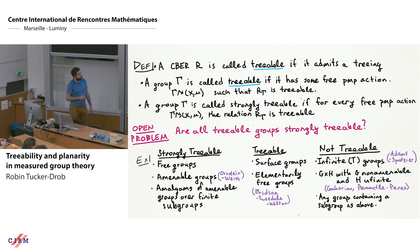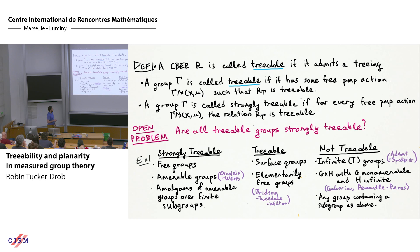For non-treeable groups: a paper of Adams and Spatzier establishes that infinite groups with property T are not treeable. Independently, arguments of Gaboriau and then Pimentel and Perez show that if you take a product group G × H with G non-amenable and H infinite, the product is not treeable. Treeability passes to subgroups, so any group containing a non-treeable subgroup is itself not treeable.